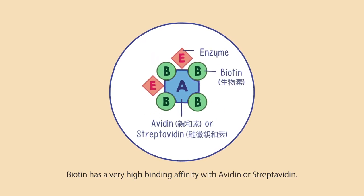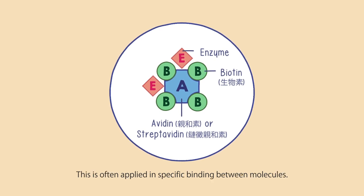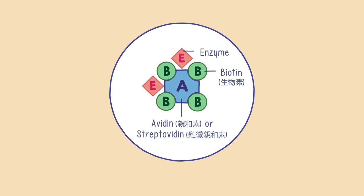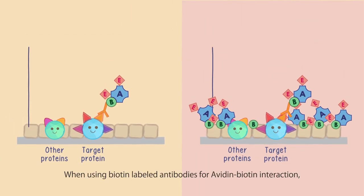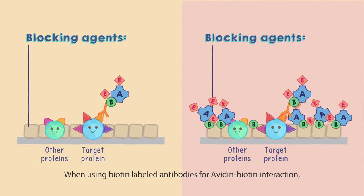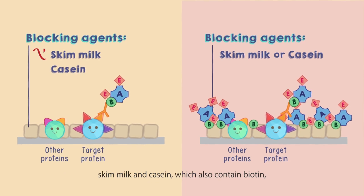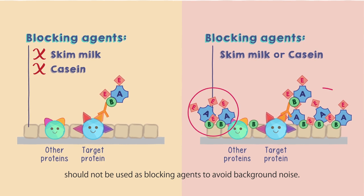Biotin has a very high binding affinity with avidin or streptavidin, and this is often applied in specific binding between molecules. When using biotin-labeled antibodies for avidin-biotin interaction, skim milk and casein, which also contain biotin, should not be used as blocking agents to avoid background noise.